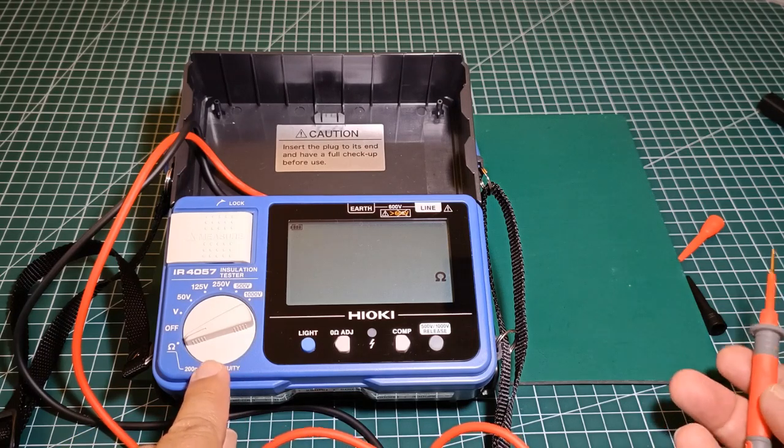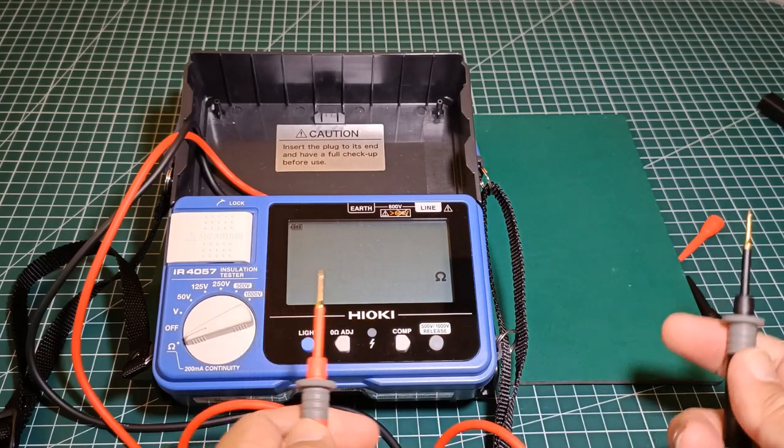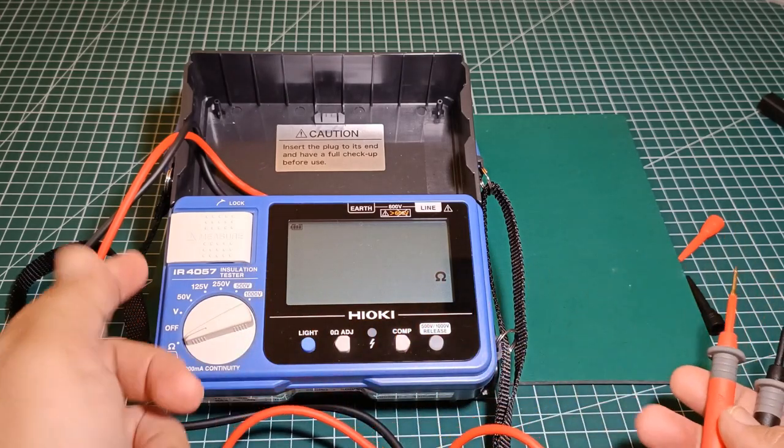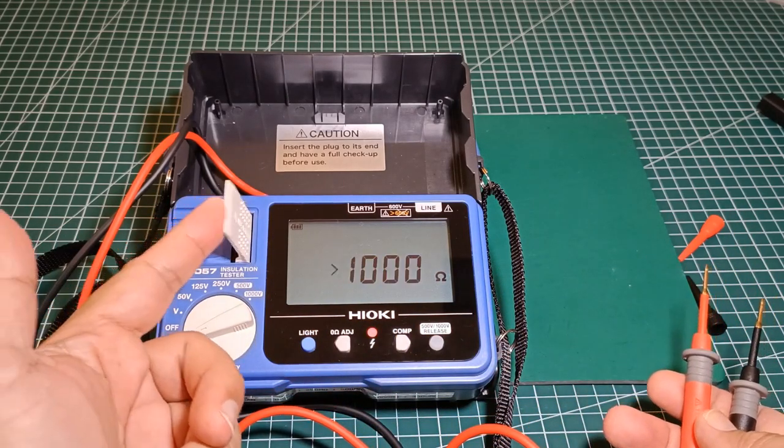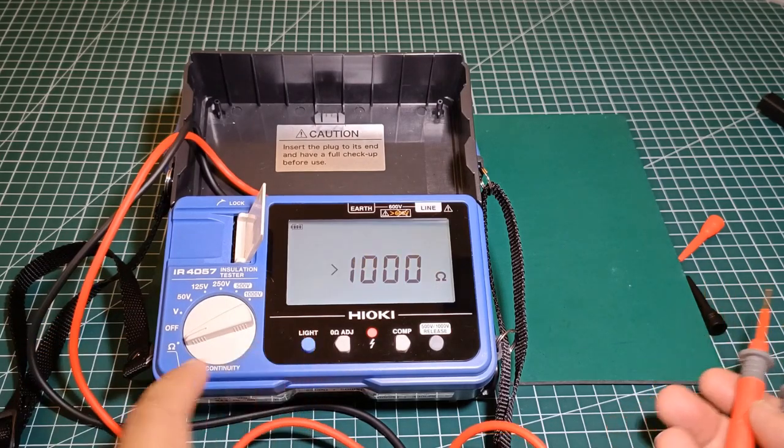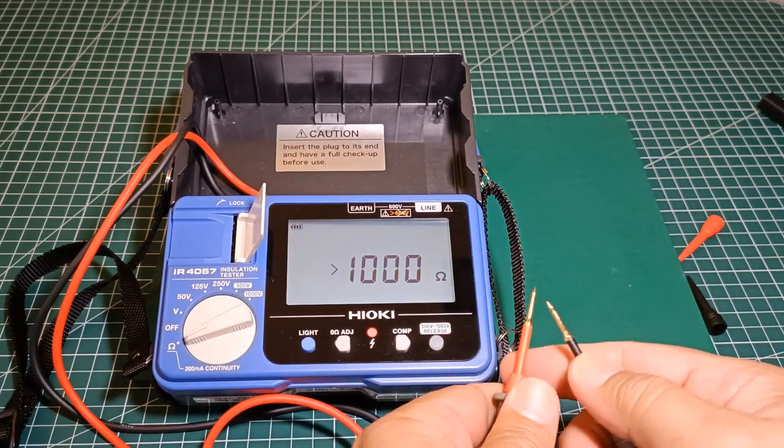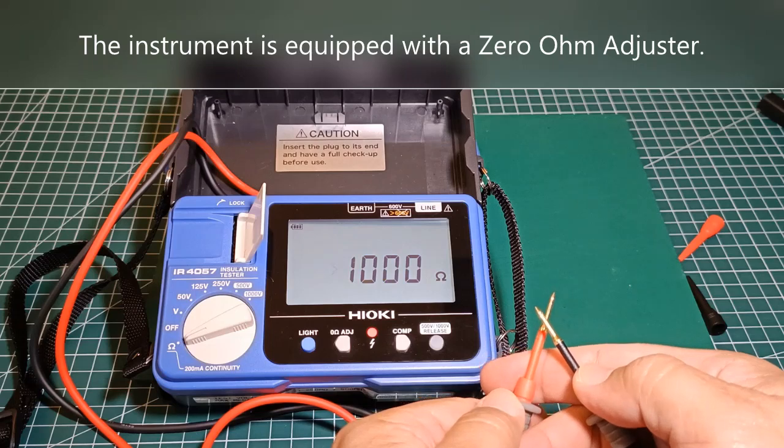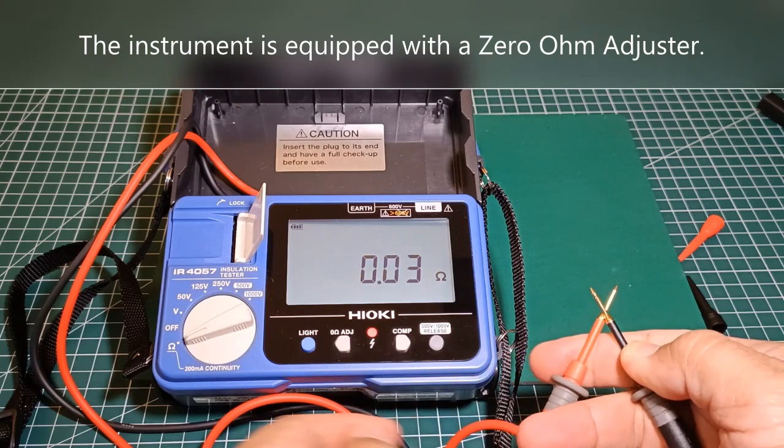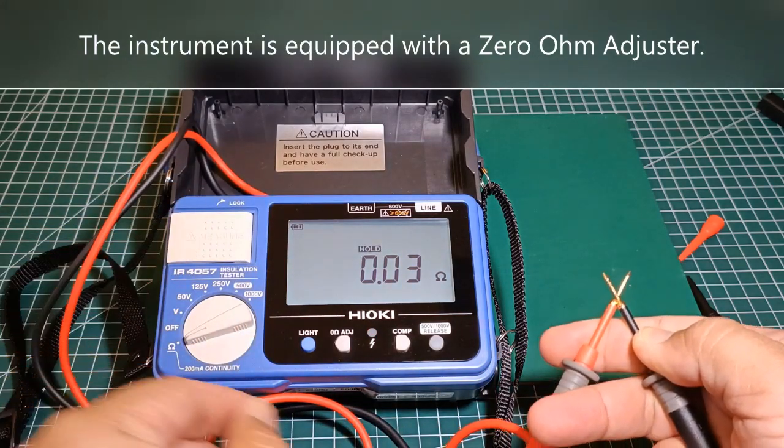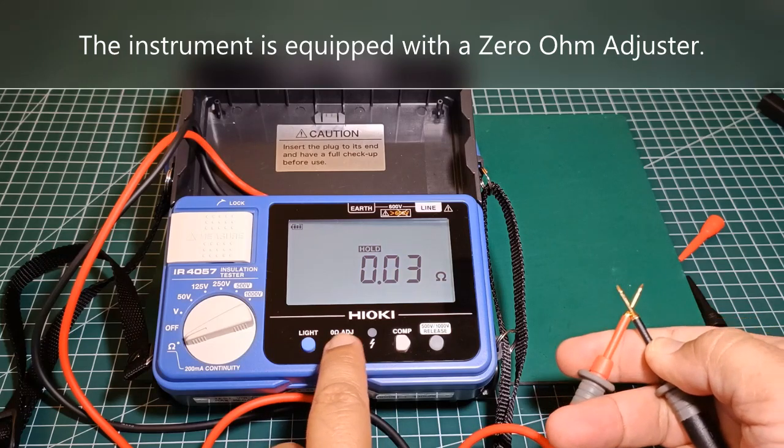To use this function to measure low resistance values, flip open the measure key, connect the tips of the test leads together, flip back the measure key, and press the zero ohm adjuster.